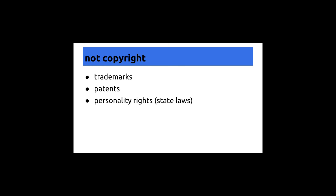Things that are not copyright include trademarks and privacy and personality rights, which tend to surface in conversations about copyright. Trademark is a different part of intellectual property law. Generally, if we're using trademarks in educational materials and we're not saying libelous things, not disparaging the brand, and there's no possibility of user confusion, trademarks are probably fine to use. Personality and privacy rights are governed by individual state laws, and are not likely to come up often in OER.